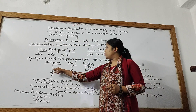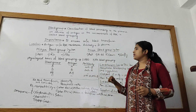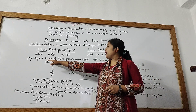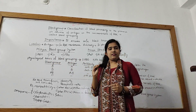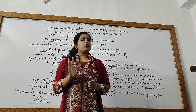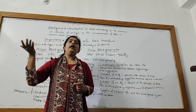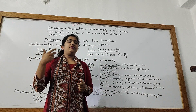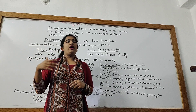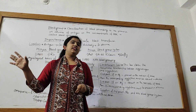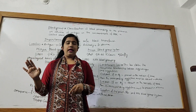If you see blood group B, the antigen is B, and the antibody present is anti-A. The physical basis of the blood group system is the presence or absence of antigen A, antigen B, or O — or both A and B antigen. O antigen basically means there is no antigen — O blood group means there is no antigen present.